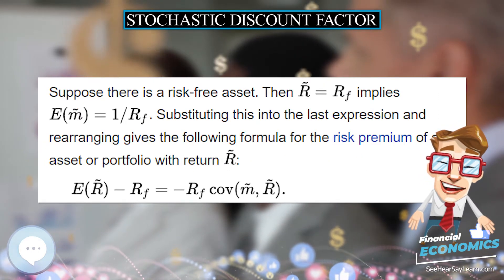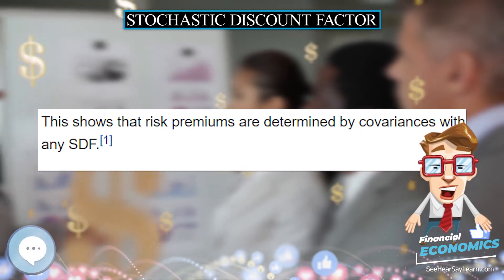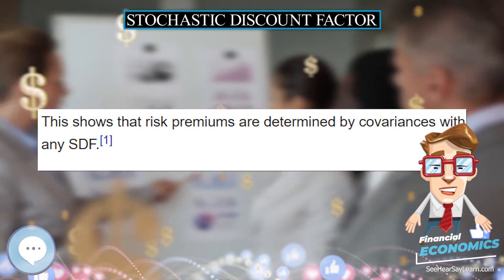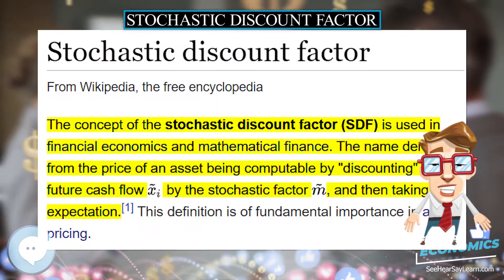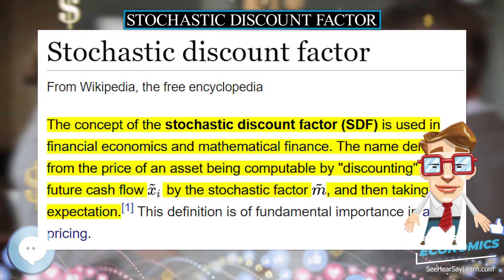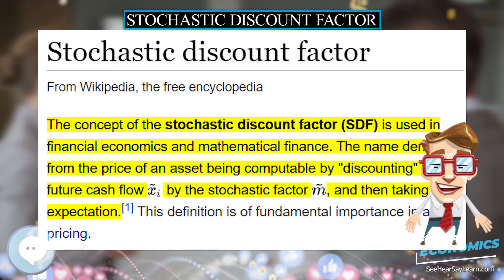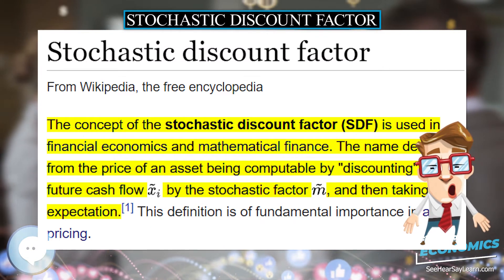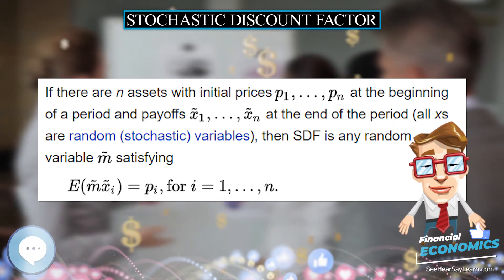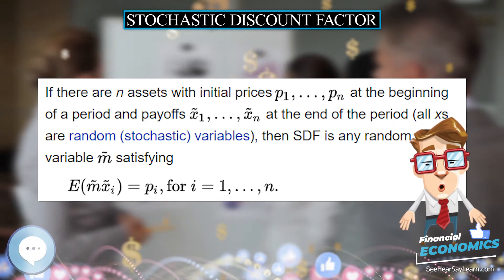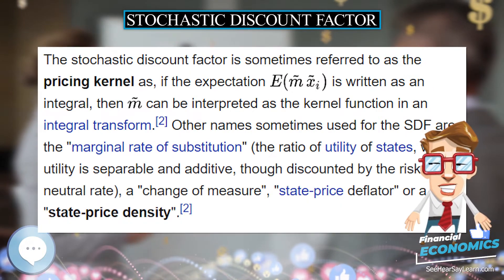Other names for the SDF sometimes encountered are: the marginal rate of substitution, the ratio of utility of states when utility is separable and additive, though discounted by the risk-neutral rate, a change of measure, state price deflator, or a state price density.